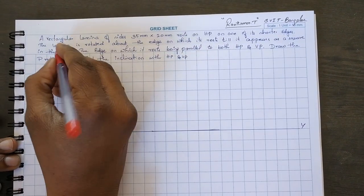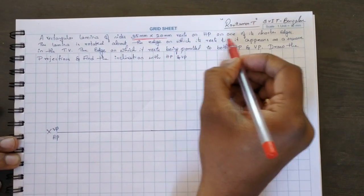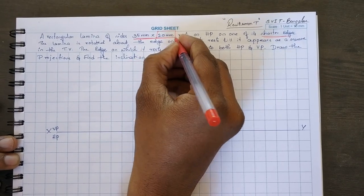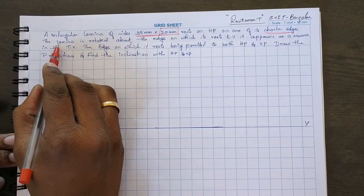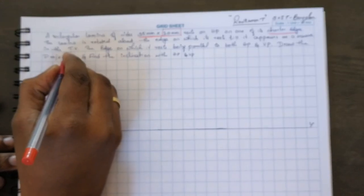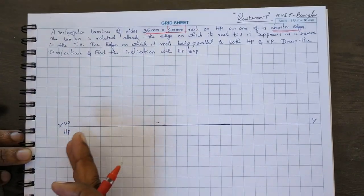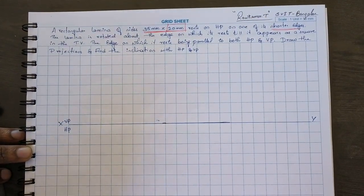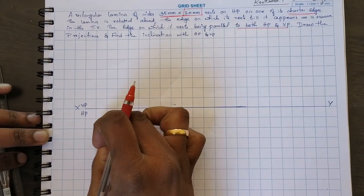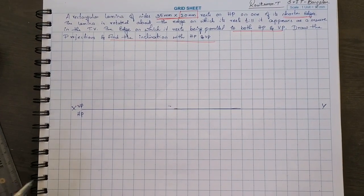Rectangular lamina problem. A rectangle of 20mm by 35mm rests on HP on one of its shorter edges, which is 20mm. The lamina is rotated about the edge on which it rests till it appears as a square in the top view. After that, the edge on which it rests is parallel to both planes. Draw the projection and find the inclination with HP and VP.